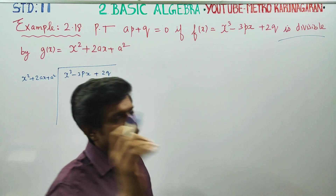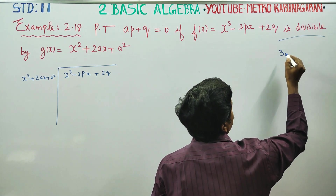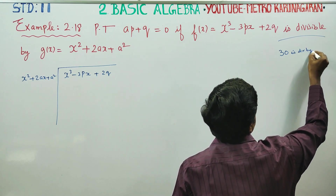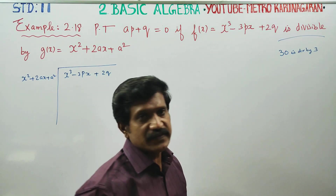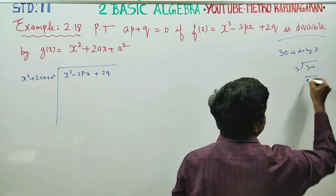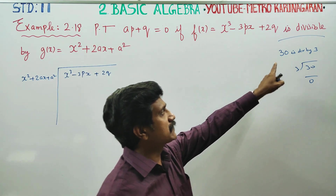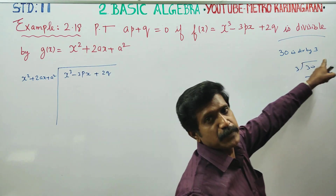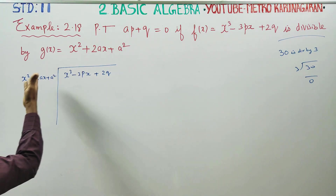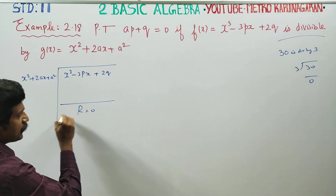If you divide by a divisible number, for example: 30 is divisible by 3. When 30 is divided by 3, the remainder is 0. So in this sum, the remainder is 0.